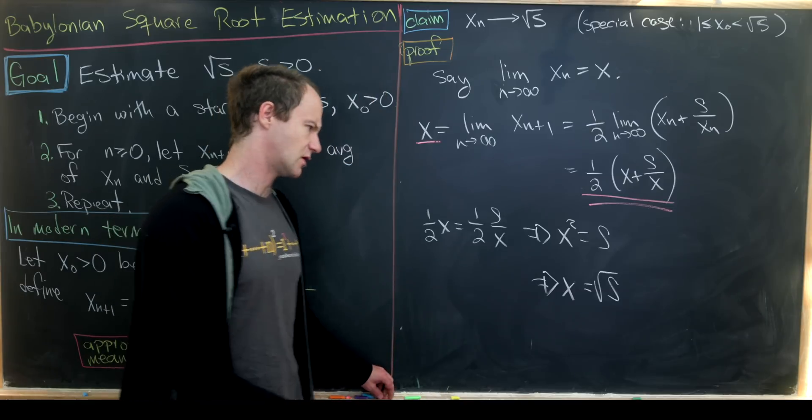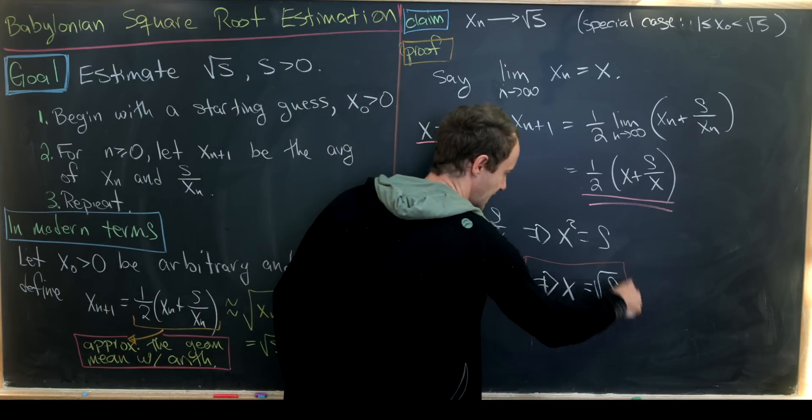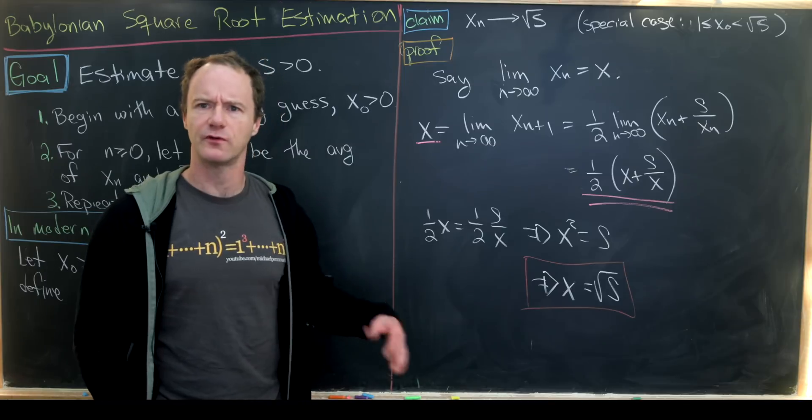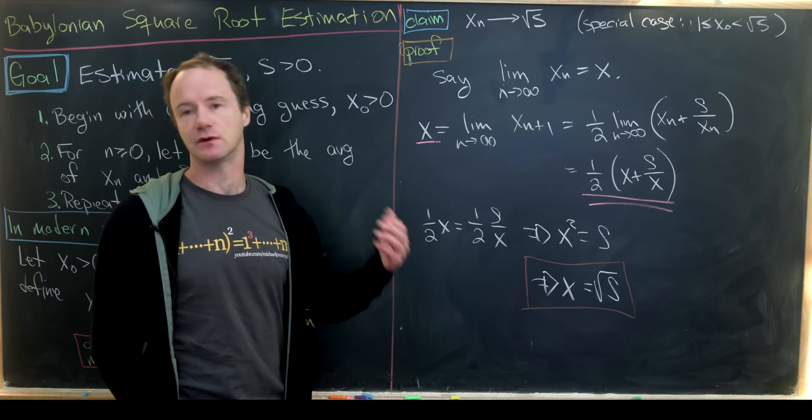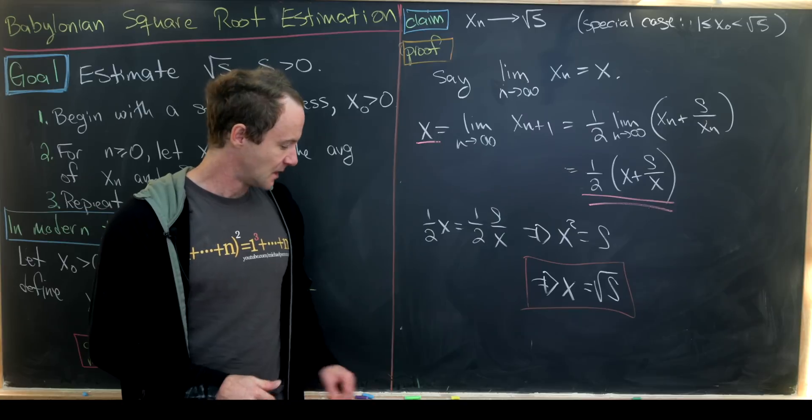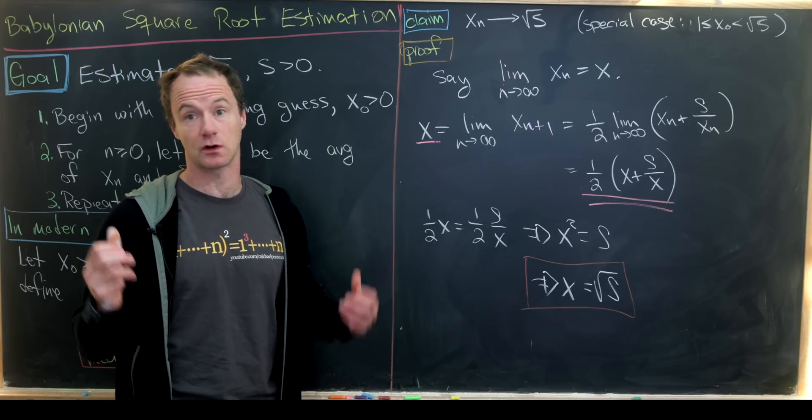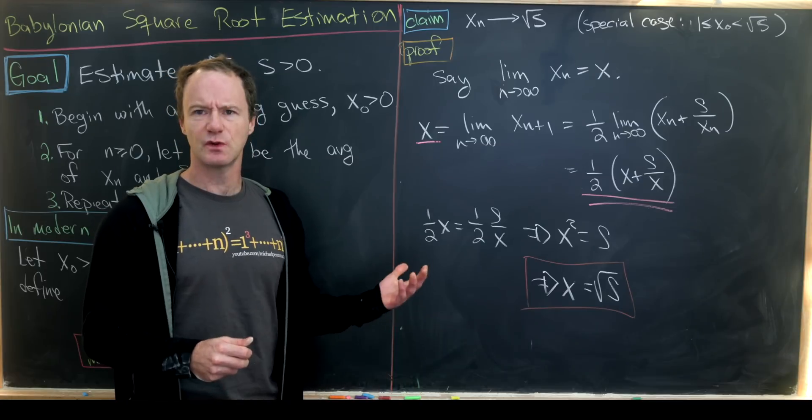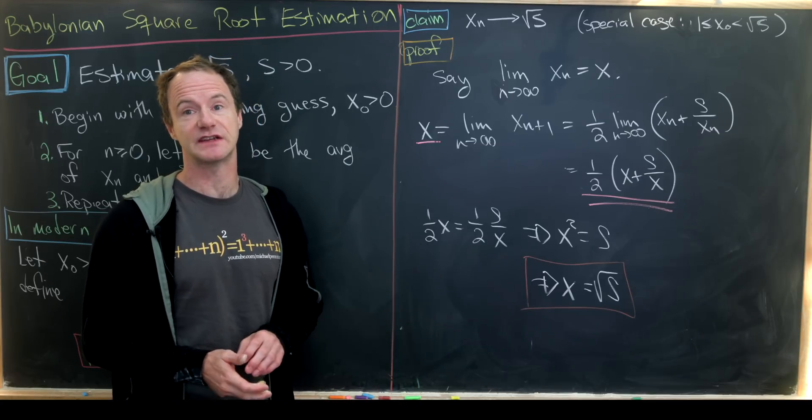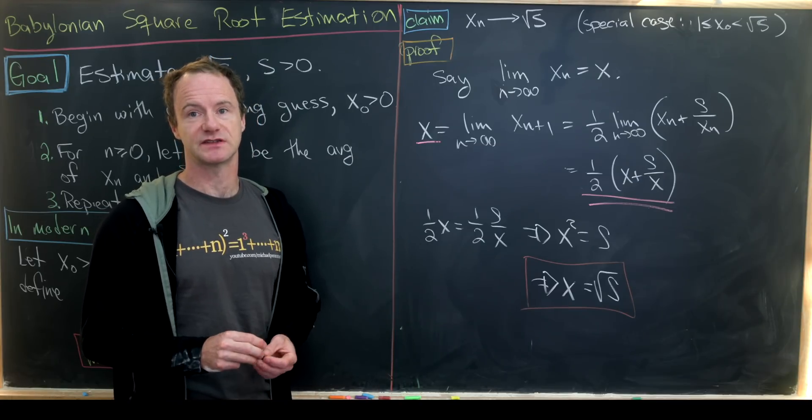You might say, well, could it be equal to negative the square root of s? But because of what we've proven about the boundedness of this sequence, it can't be negative the square root of s. So I've done other problems on the channel that are historical mathematics problems. There's one on the screen right now if you'd like to check it out. And that's a good place to stop.